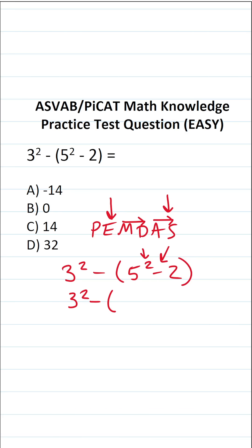5 squared is 5 times 5, which is 25. So this is 25 minus 2. Let's take care of what's in parentheses. So this becomes 3 squared minus 25 minus 2 is 23.